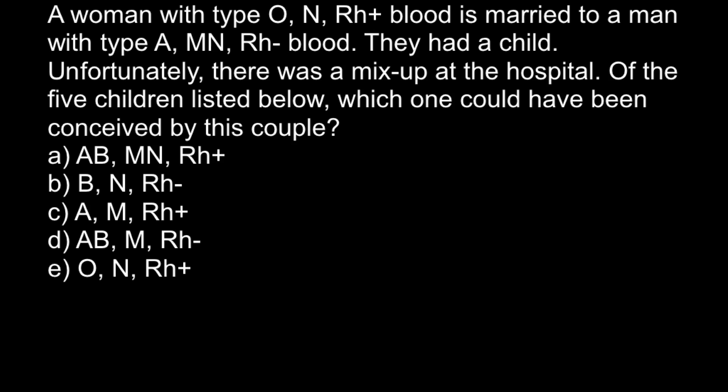So here is my explanation. First, let's start with blood group O for the mother, and we also know the father belongs to blood group A. In the ABO blood group system, we may have four different types of blood. Blood type A can be made by two genotypes: AA and AO. These two genotypes make one phenotype A.